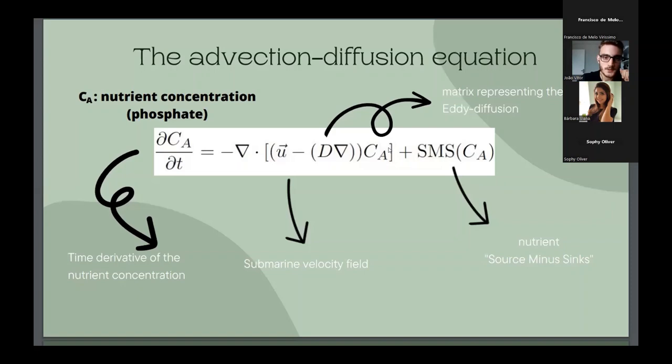So this is the main equation for my problem, the advection-diffusion equation that models the nutrient concentration. Here Ca represents the phosphate. So, we can see that this equation depends on the right hand of the submarine velocity field, here written as U,